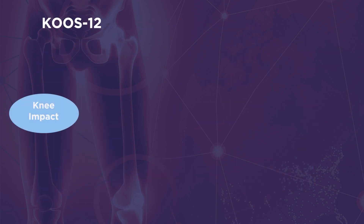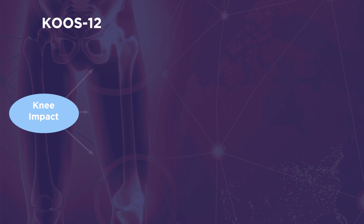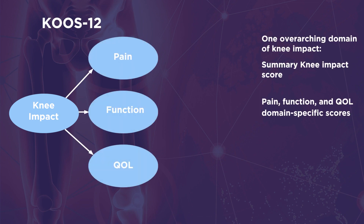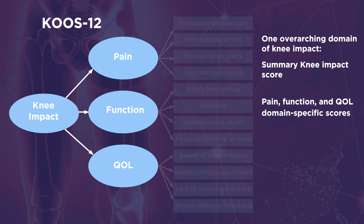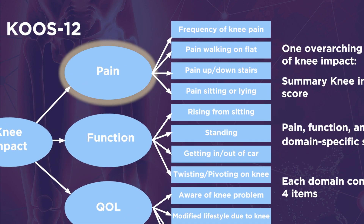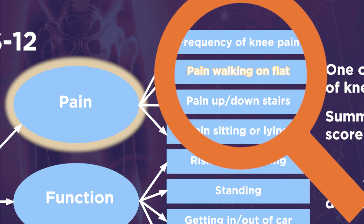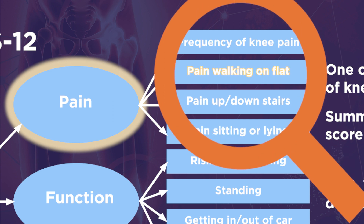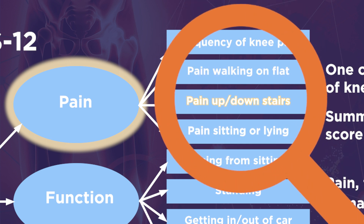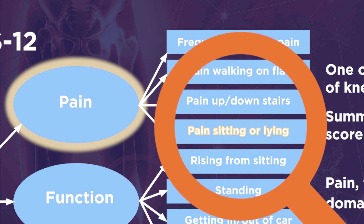Here is an example of the conceptual framework for the 12-item COUS. It provides three domain-specific scores — pain, function, and QOL — and a summary knee impact score. Each of the three domains has four items. For example, the pain domain is based on frequency of knee pain, pain walking on flat surface, pain up and down stairs, and pain sitting or lying.